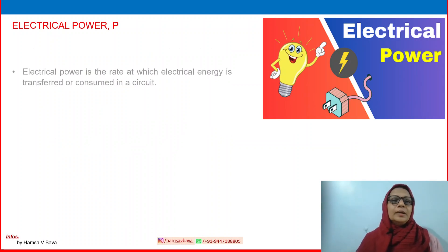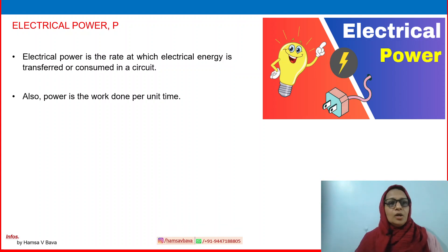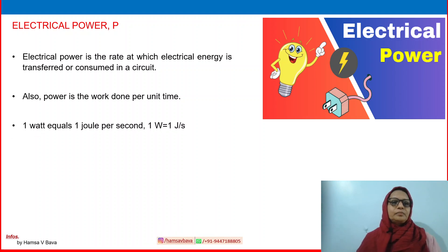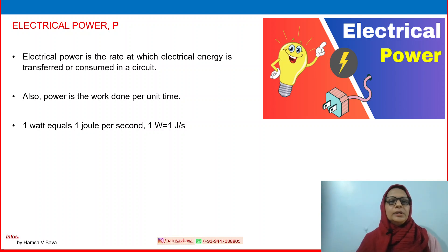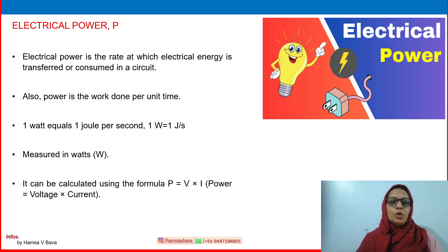The next parameter is electrical power P. Electrical power is the rate at which electrical energy is transferred or consumed in a circuit. We know that power is the work done per unit time; one watt equals one joule per second. Measured in watts, it can be calculated using the formula: instantaneous power P = V × I, voltage multiplied by current.